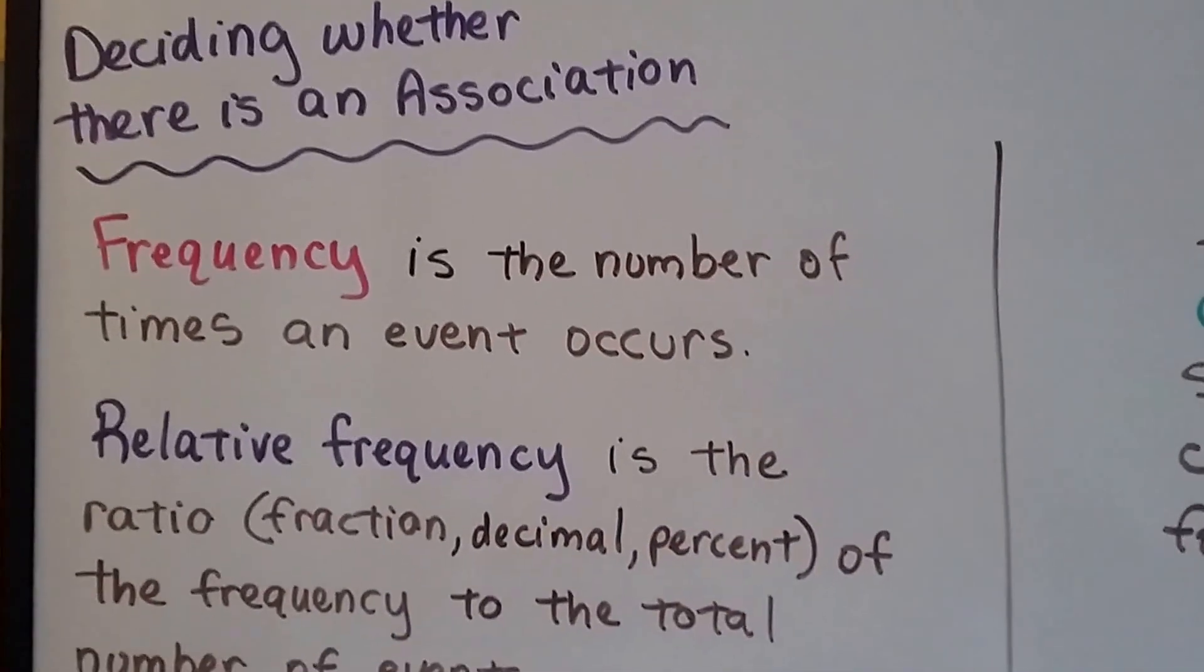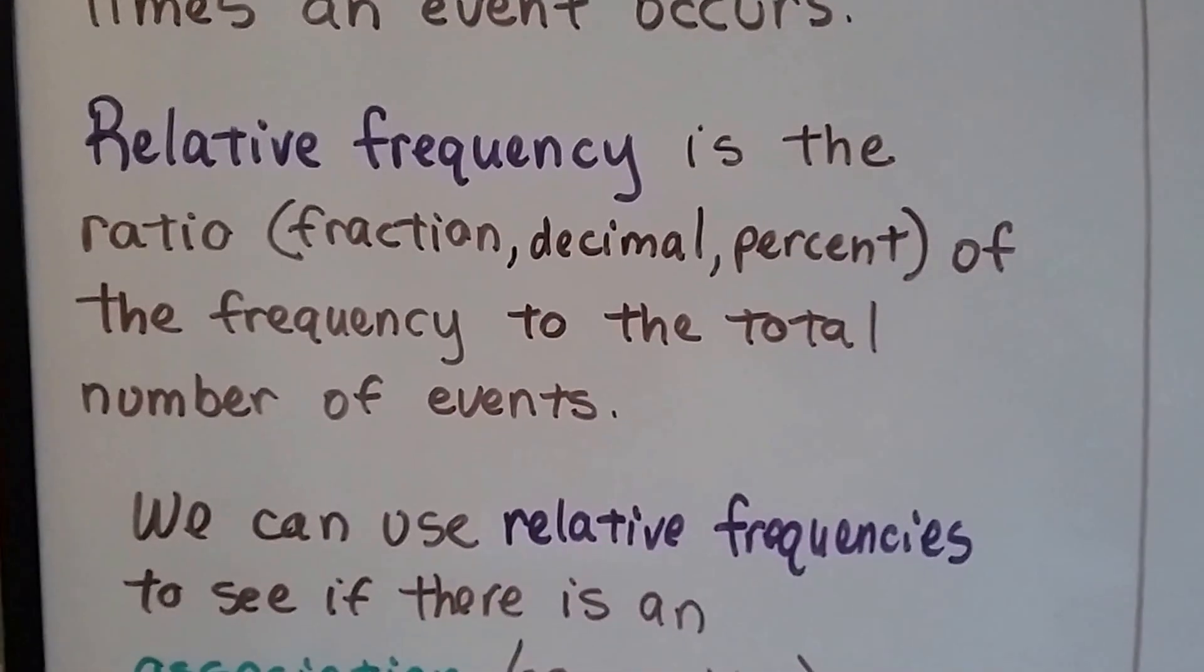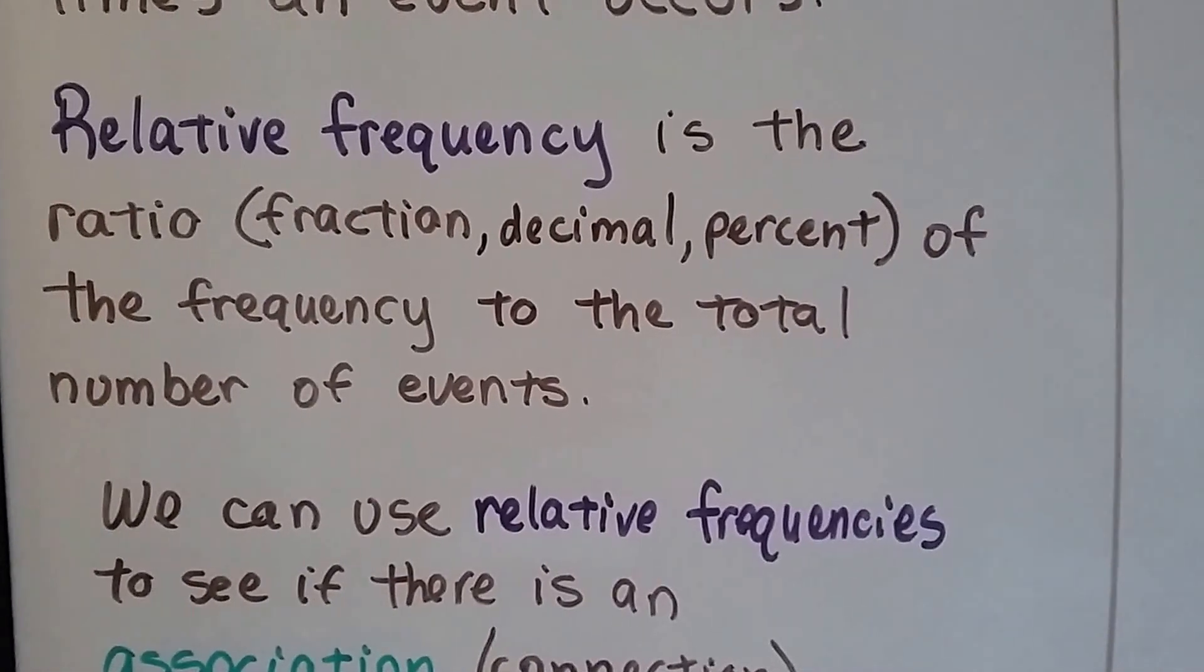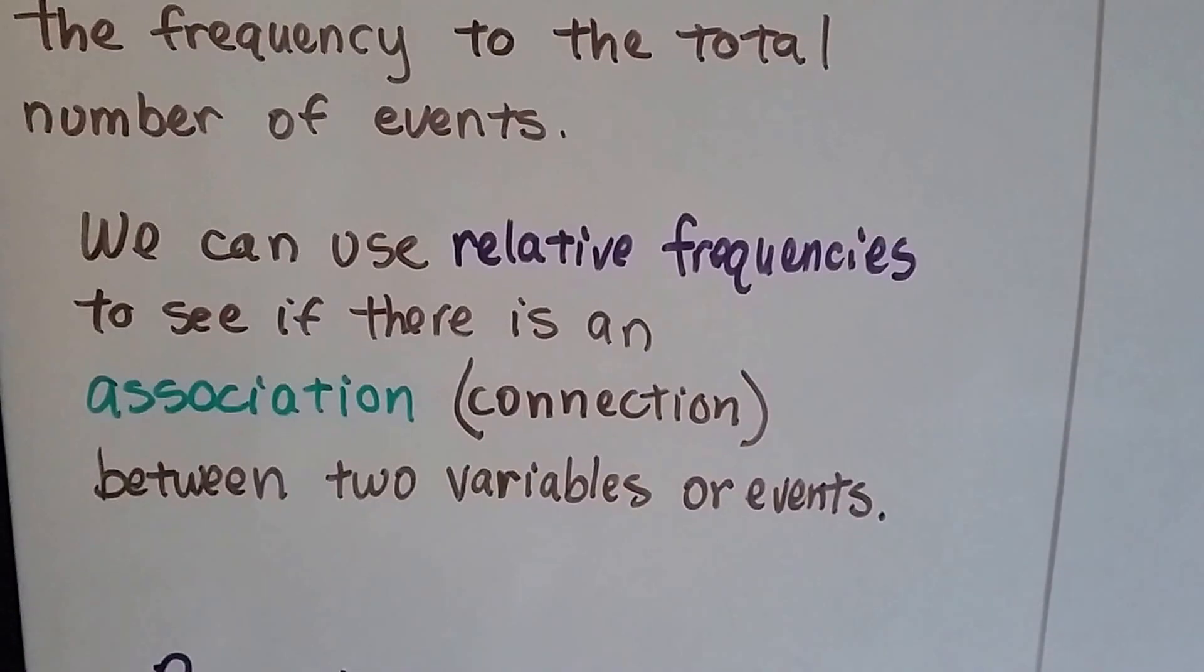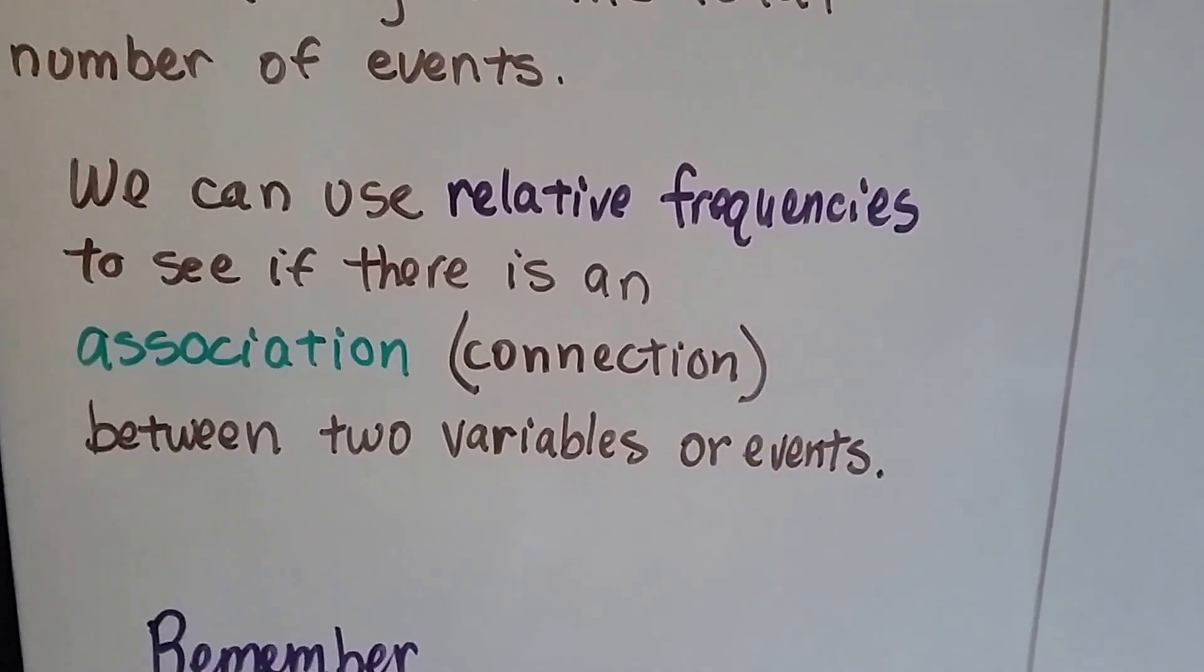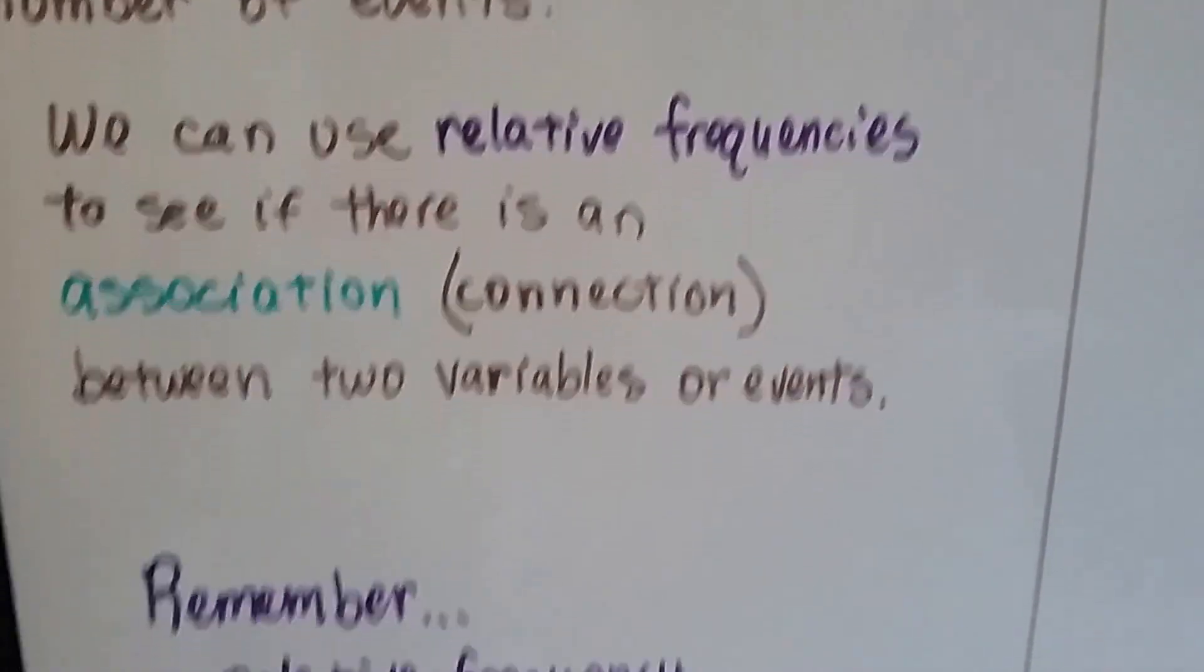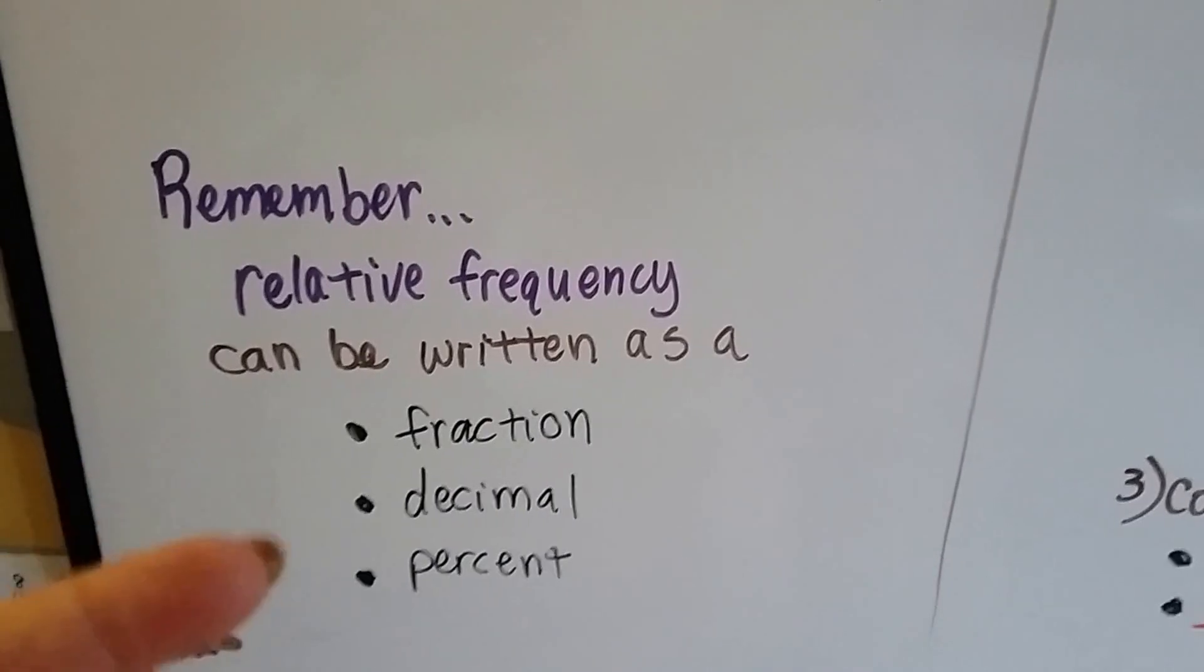Frequency is the number of times an event occurs, and relative frequency is the ratio, like a fraction, decimal or percent, of the frequency to the total number of events. We can use relative frequencies to see if there's an association, a connection between two variables or events. Remember, relative frequency can be written as a fraction, a decimal or a percent.